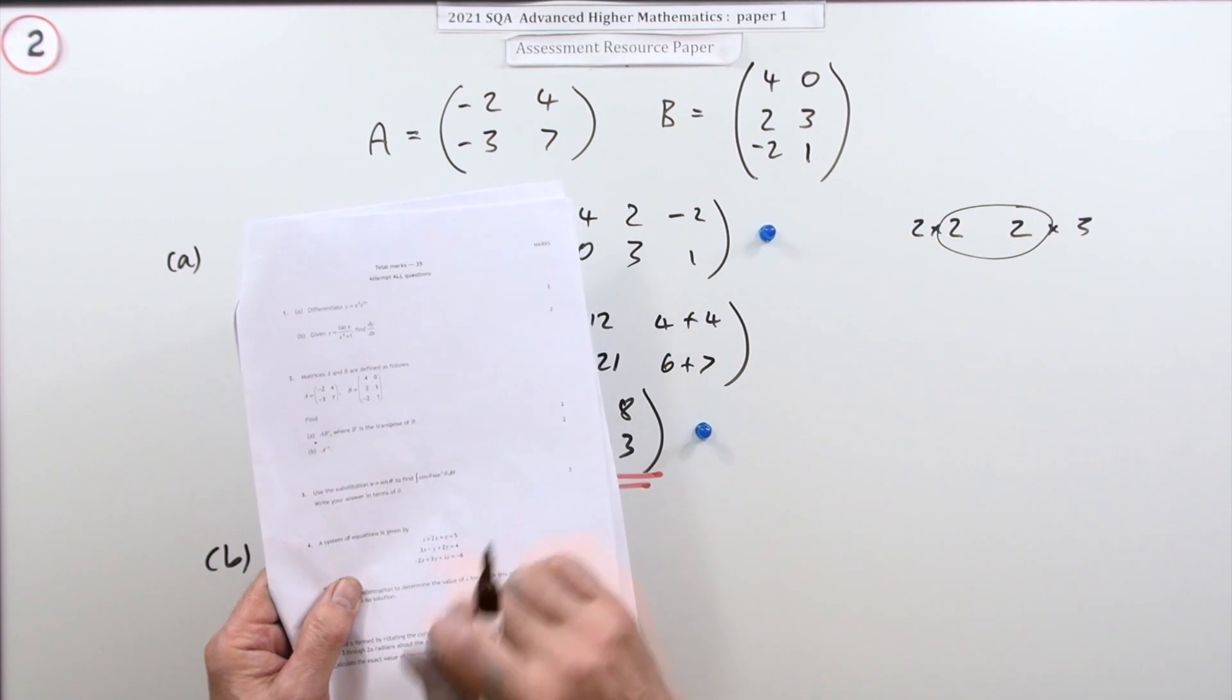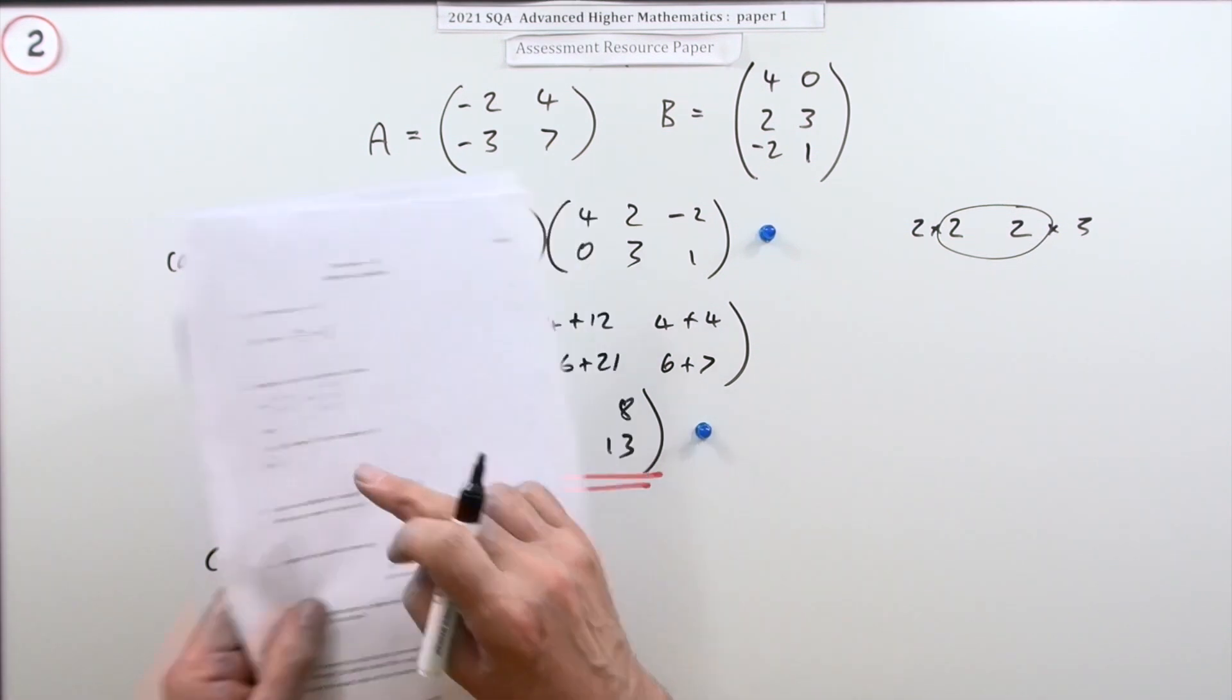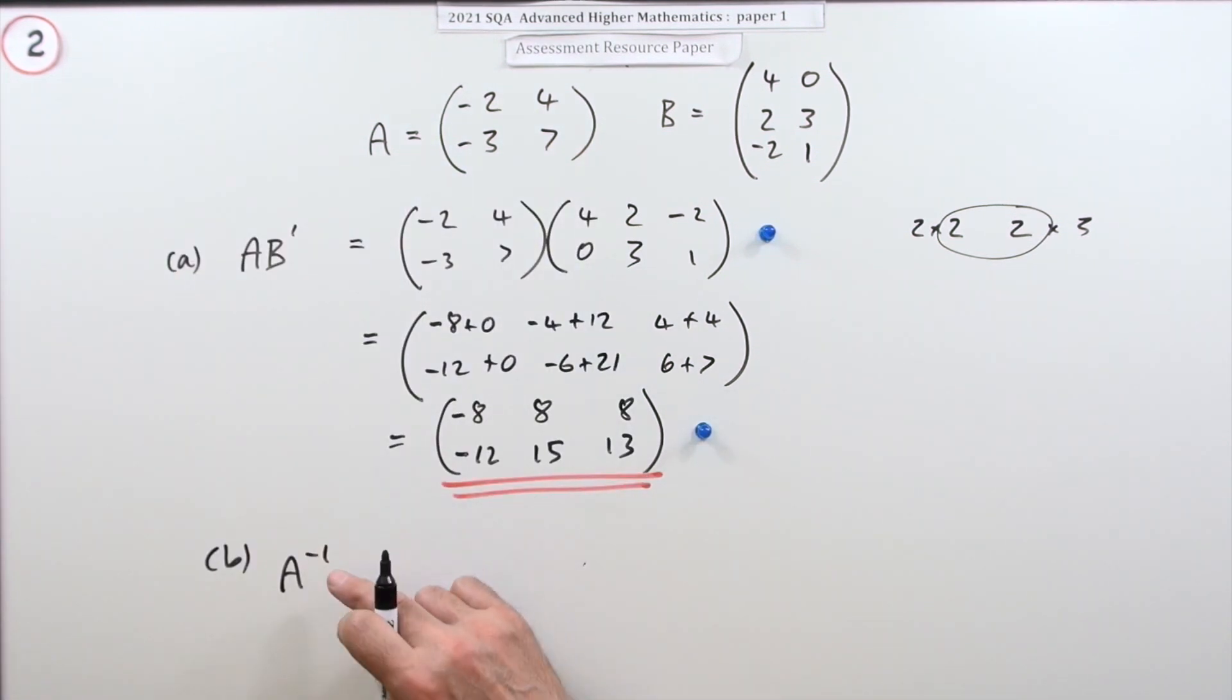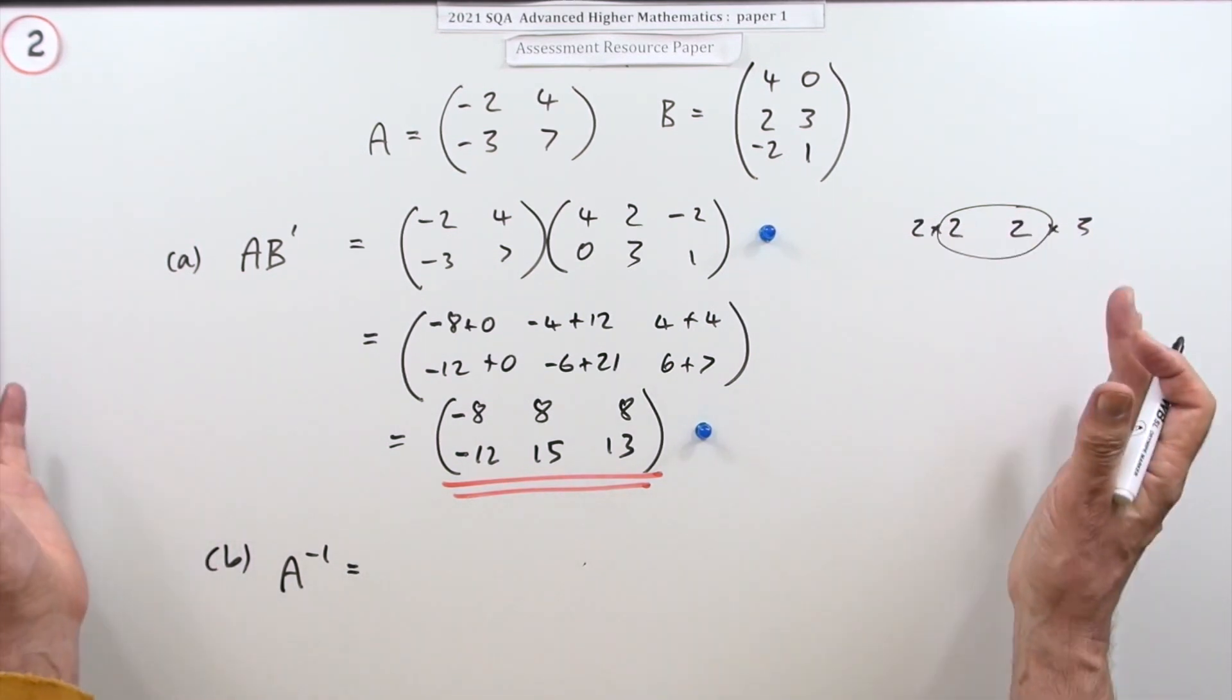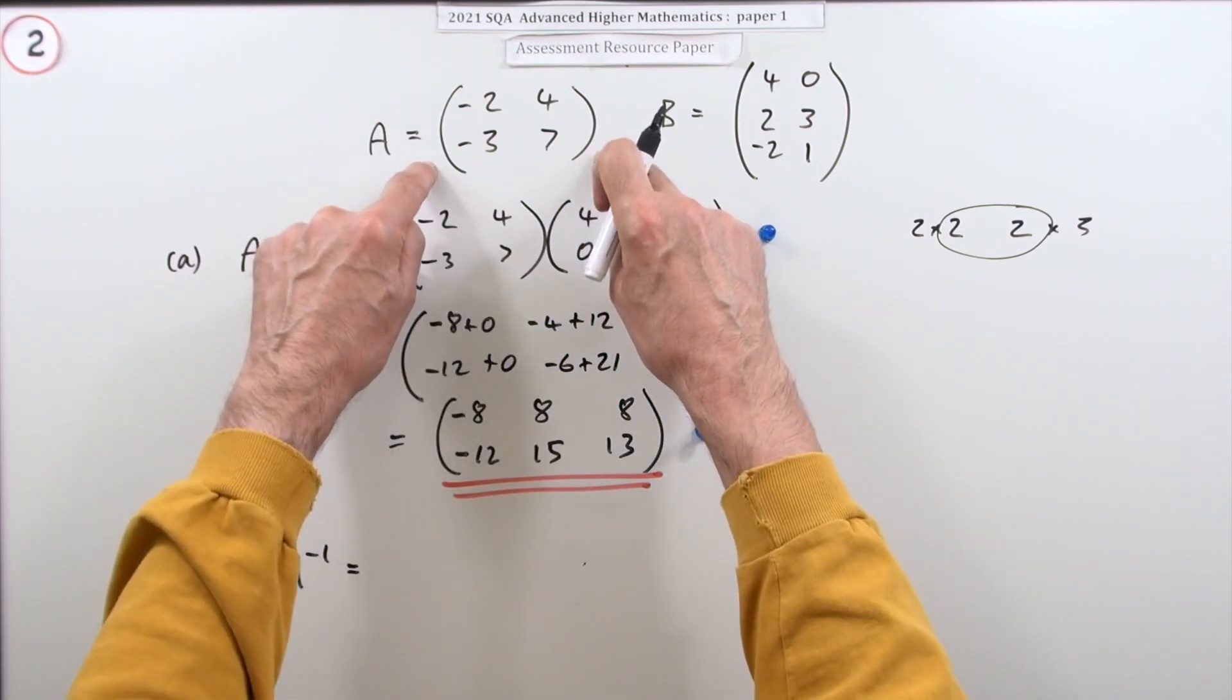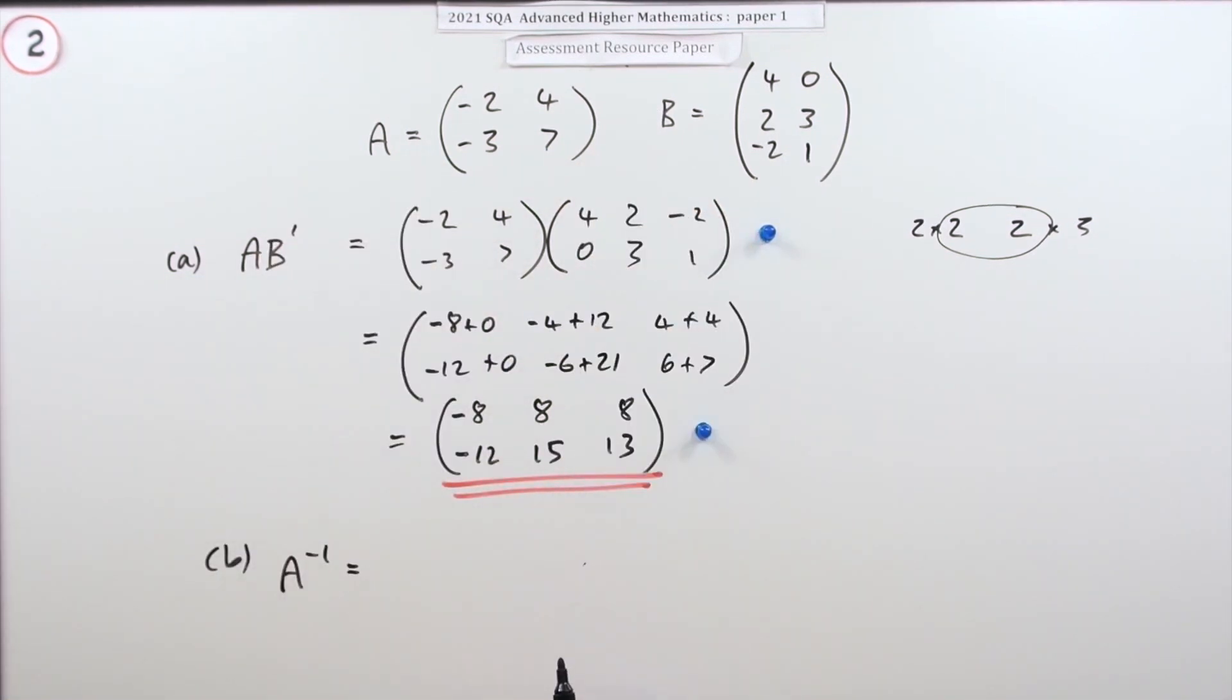So part (b), for two marks, find A^(-1), that's the inverse of the matrix. Now finding the inverse of a matrix is quite a complicated business. It's quite easy in the case of a 2x2, luckily, that's why it's only two marks.